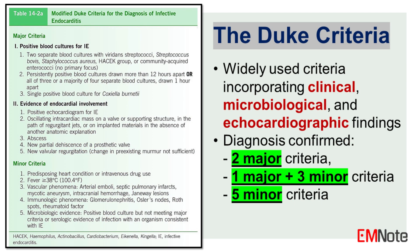The Duke Criteria, established in 1994 and later modified in 2000, are widely used for the diagnosis of IE. These criteria incorporate clinical, microbiological, and echocardiographic findings. The diagnosis is confirmed by meeting two major criteria, one major and three minor criteria, or five minor criteria.